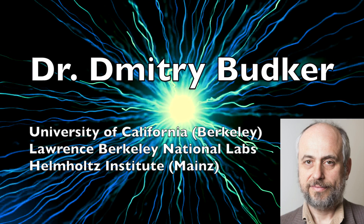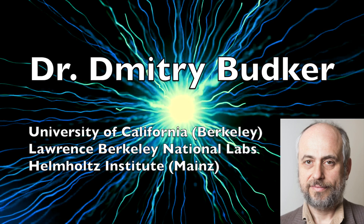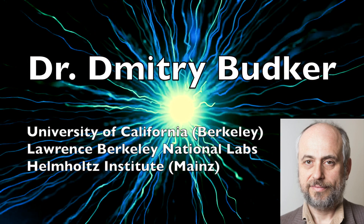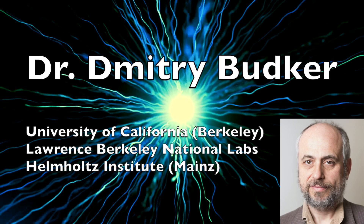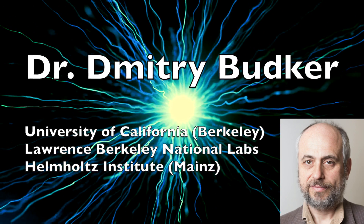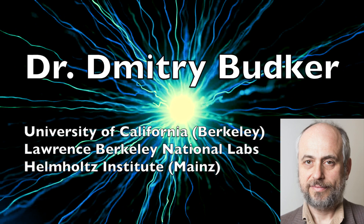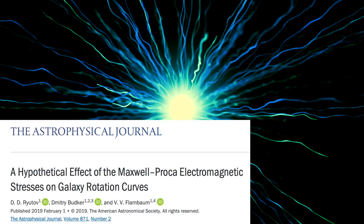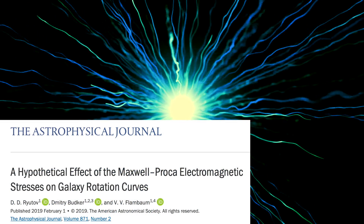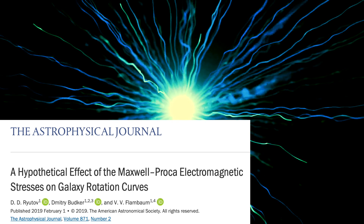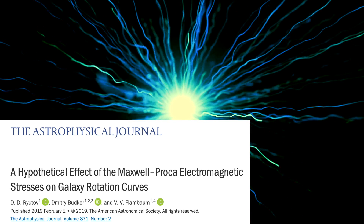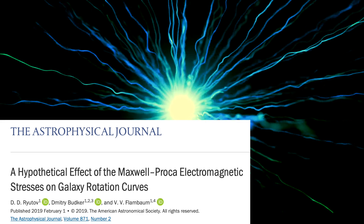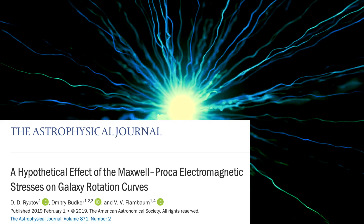The idea is that if a photon has some mass — we normally assume that it has zero mass, but if it does have mass, you have to change Maxwell's equations a little bit, so they become Maxwell-Proca equations. It's a very well-known system of equations that you can find, for example, in the famous book by David Jackson on electrodynamics.